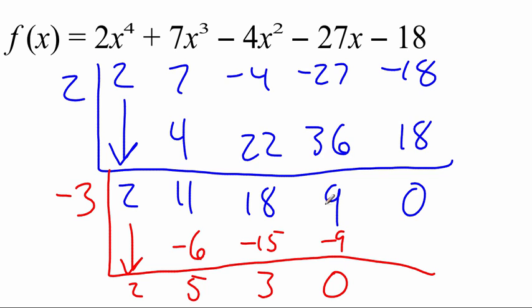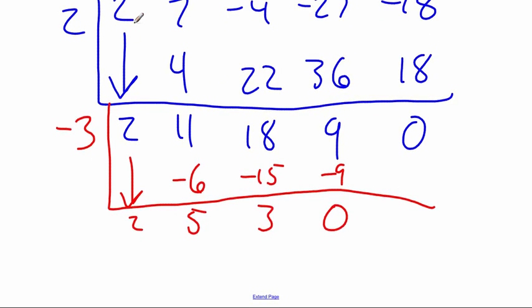If we wanted to write out the answer that we got after running both of these rounds of division, well, we started with a quartic function, a fourth power function, but then we ran two sets of division. So instead of dropping the power by 1, we're going to have to drop the power by 2. So now this 2 becomes 2x squared plus 5x plus 3. That's the answer after we ran both rounds of division.